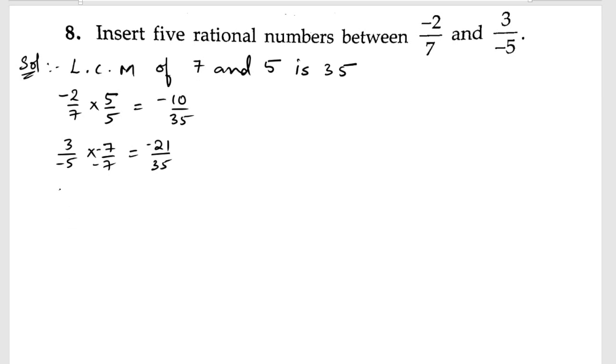Let us write down the numbers. Now we can write the rational numbers between these two numbers. Minus 21 by 35, minus 20 by 35, minus 19 by 35, minus 18 by 35.